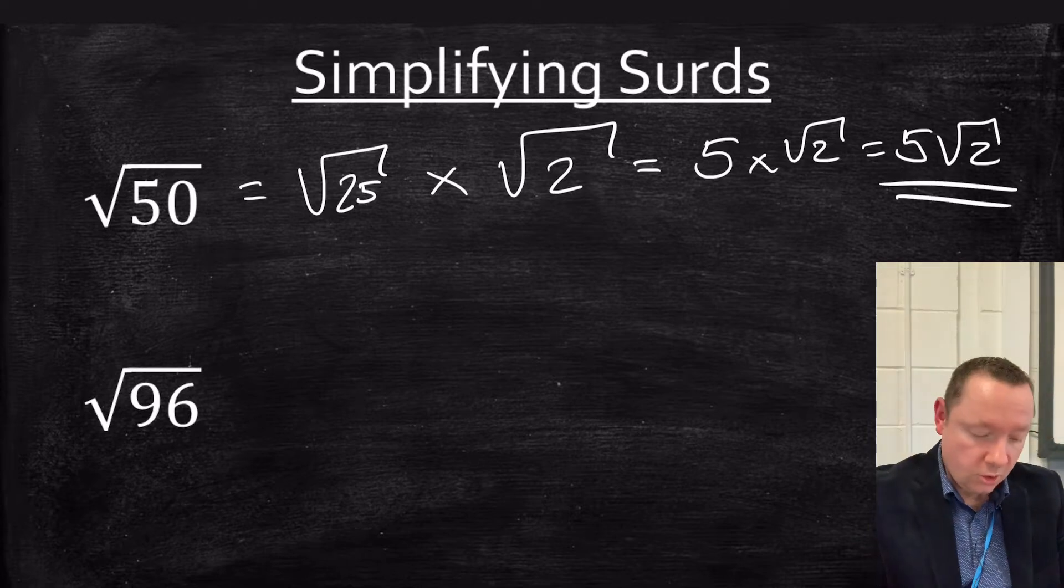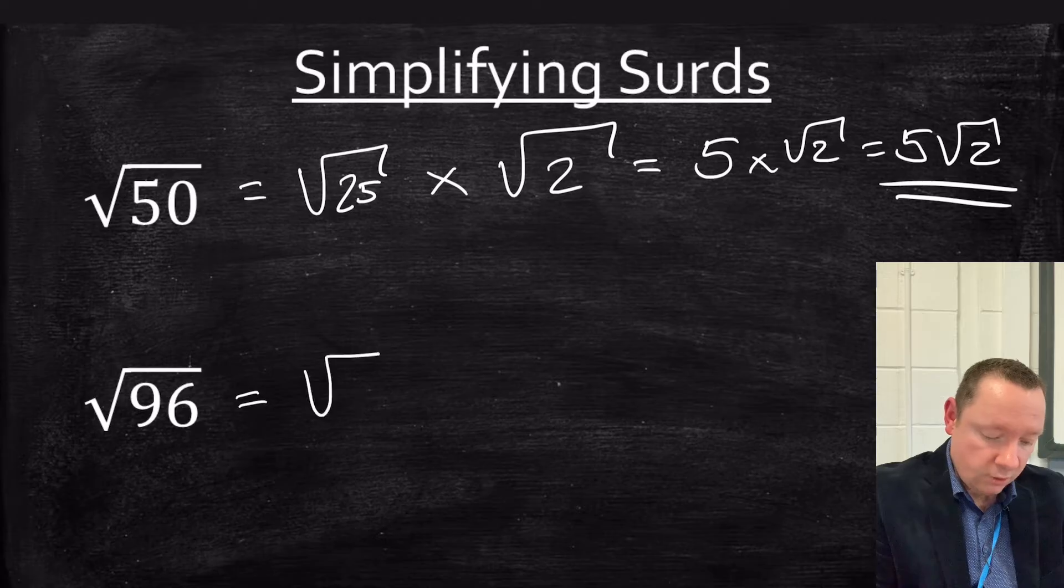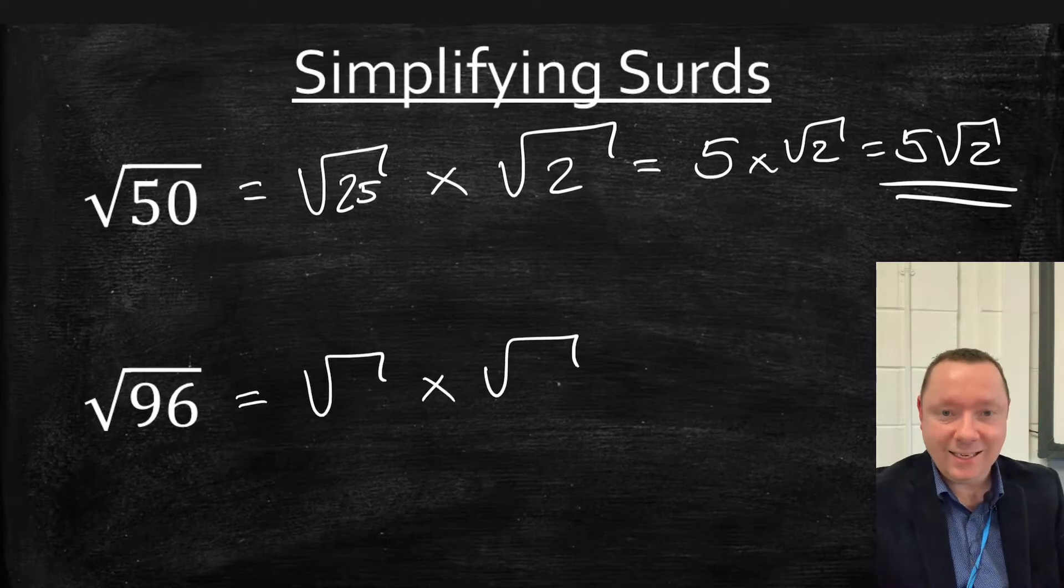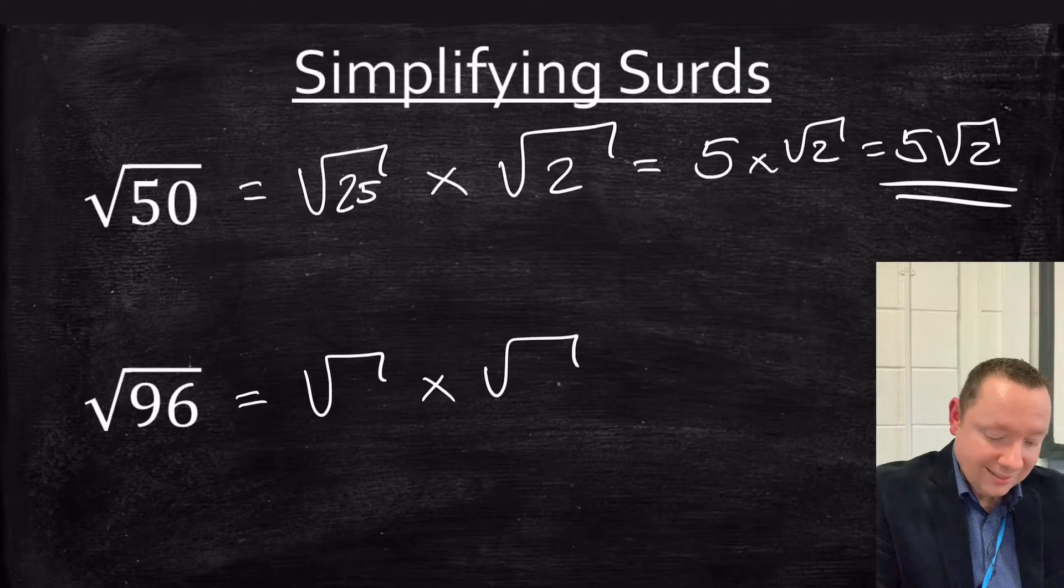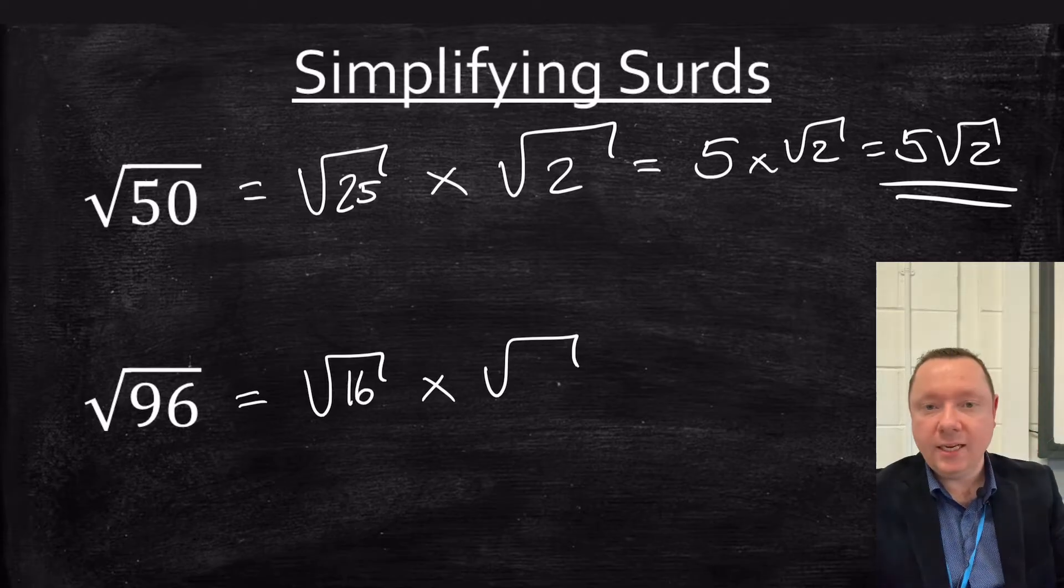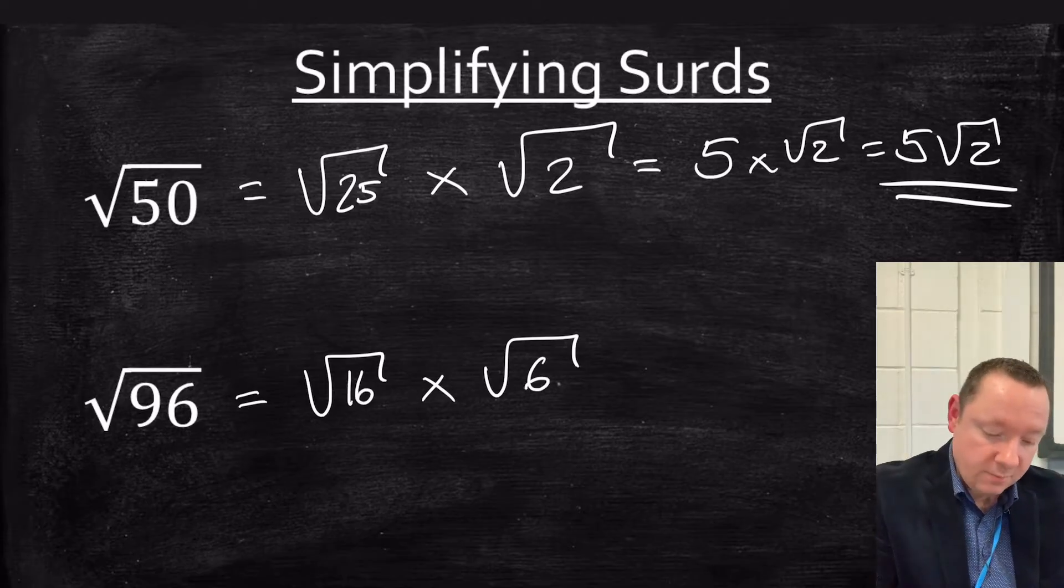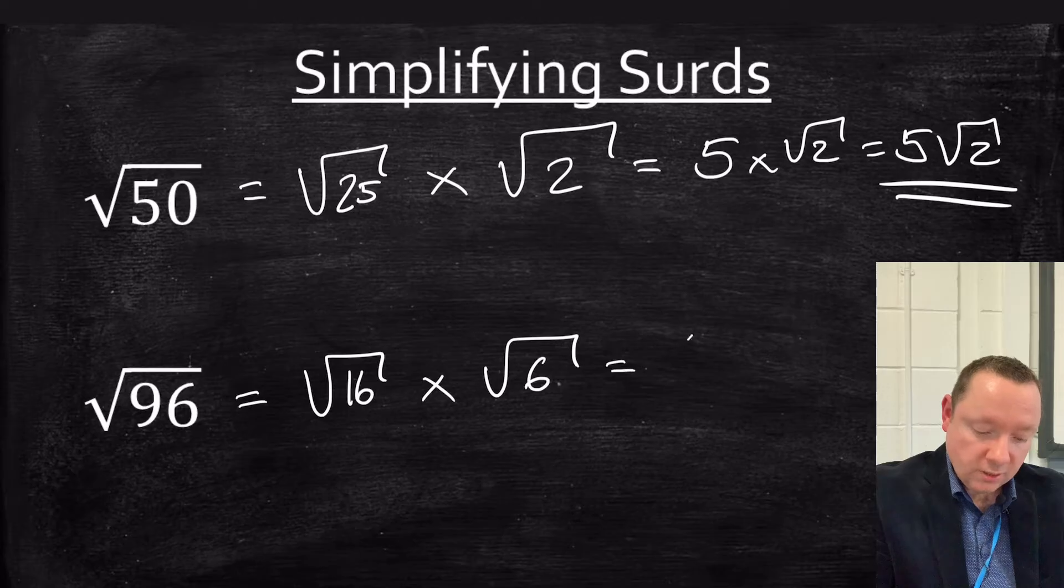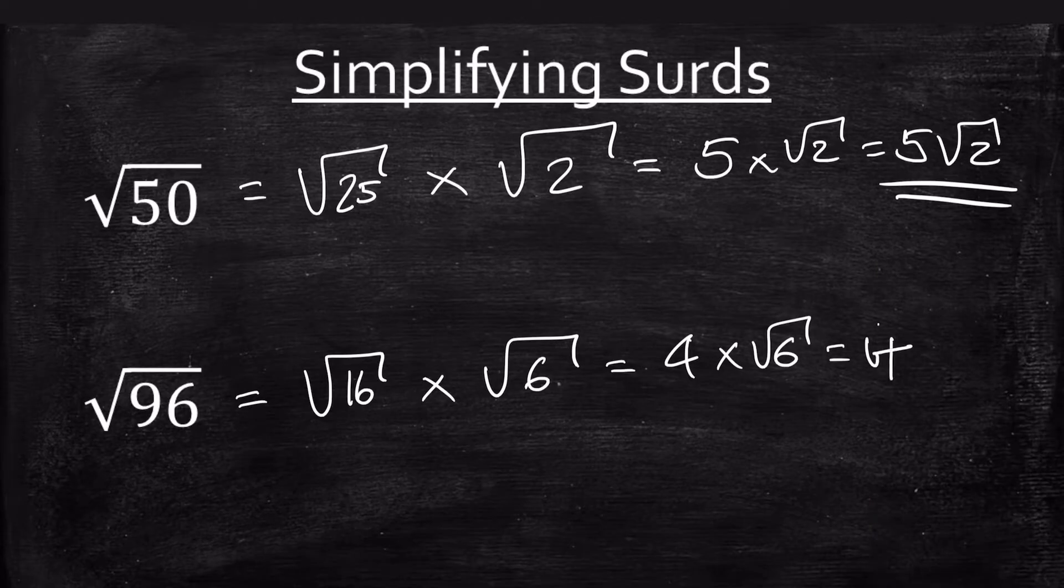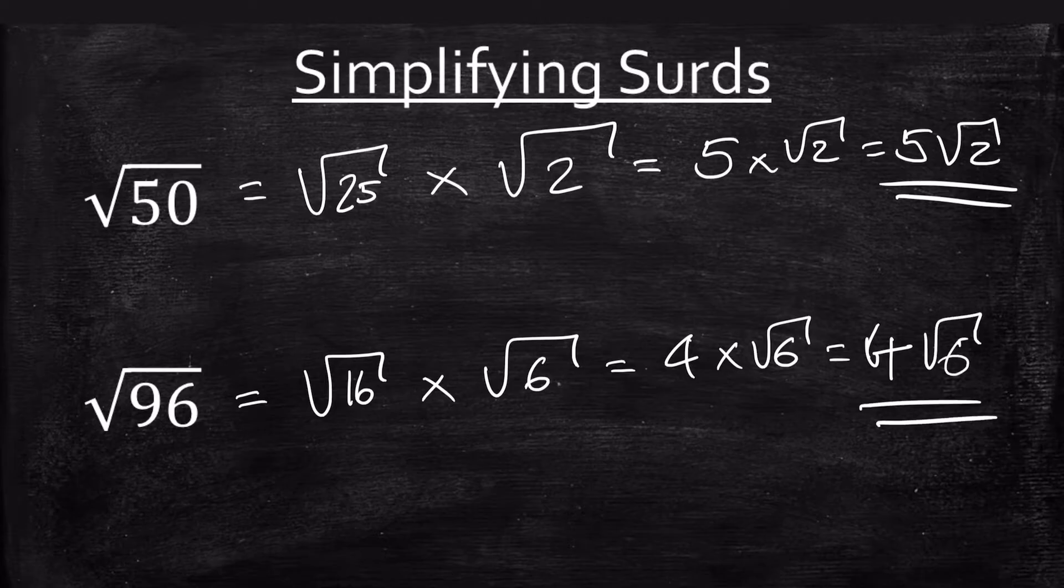Let's do another one, root 96. So I'm looking for two numbers that times together to make 96. If you do that you'll get 16, and it goes in 6 times. So the square root of 16 is 4. So it's 4 times root 6 or 4 root 6. Always find the biggest square number that goes in. If I'd used 4 there then I would have had to simplify again at the end.